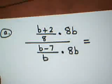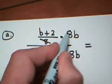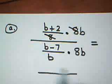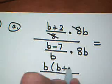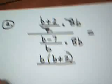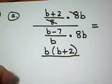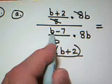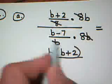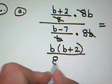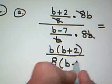And look what happens. In the numerator, the 8's cancel, and I'm left with B times the quantity B plus 2. I'm not going to distribute because it's already factored. In the denominator, the B's cancel, and I'm left with 8 times the quantity B minus 7.